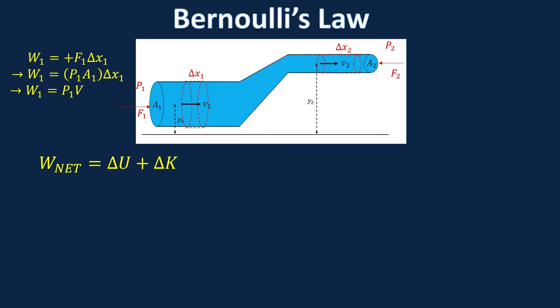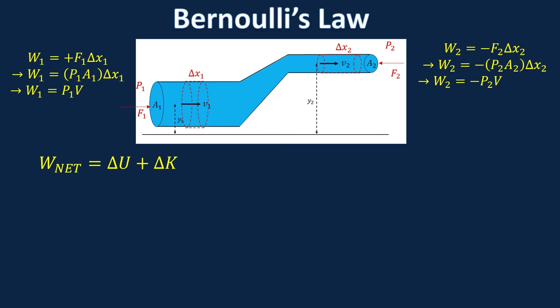Looking at the right side: the water is still flowing left to right, but the outside force on the right side is inward, making it negative work. So the work done in section two is negative P2 V. I'm not using a volume subscript because the volume of the cylinder on the left equals the cylinder on the right — constant volume flow rate. For the net work, we add both sides: P1 V minus P2 V.